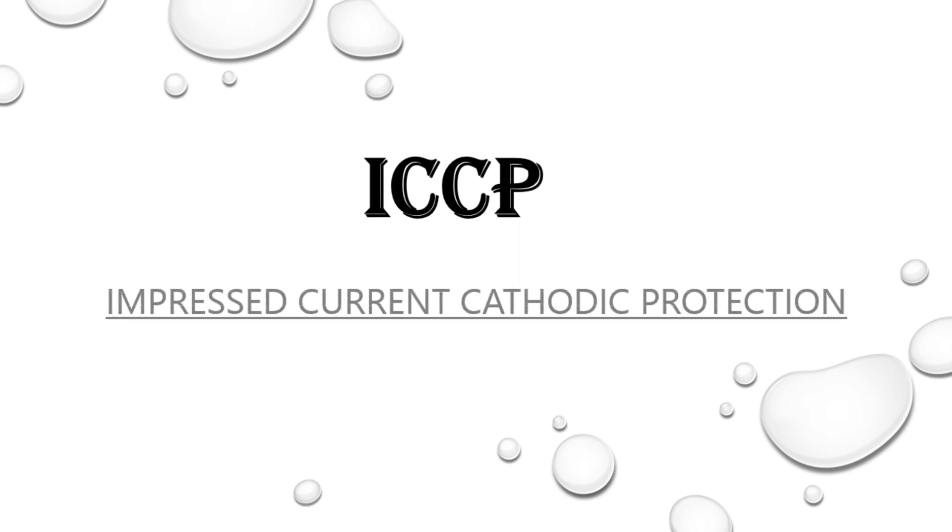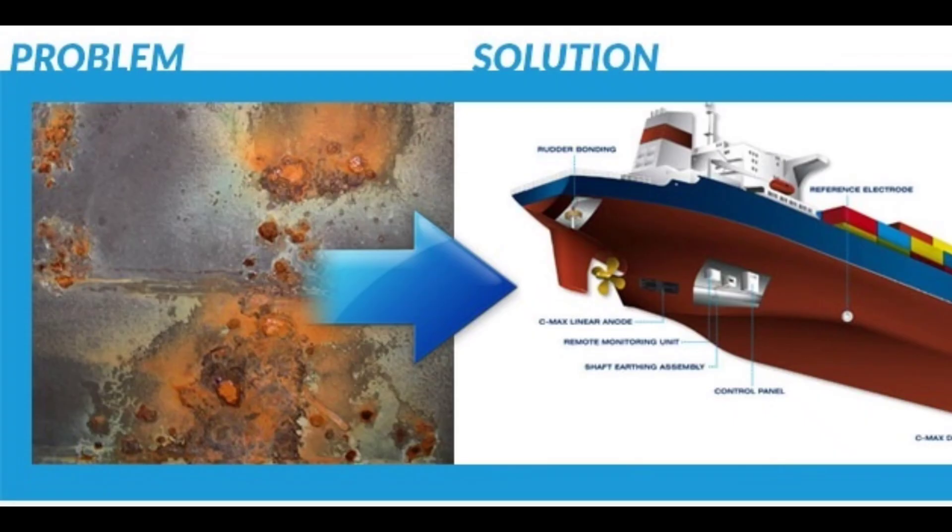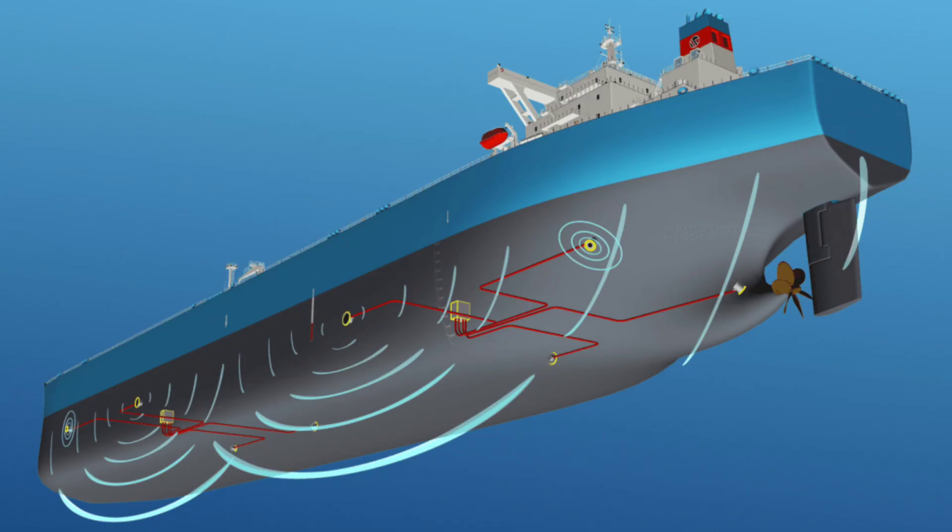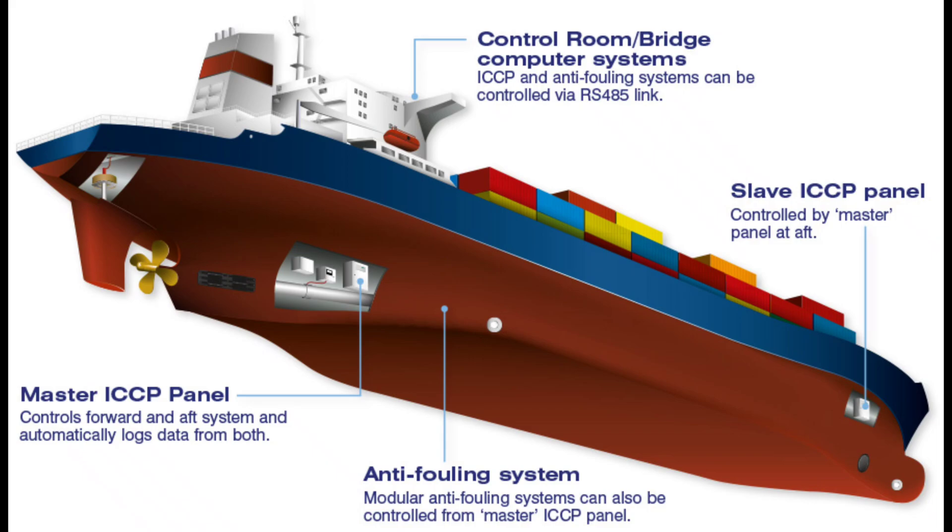Hello guys, welcome to my channel. Today we will discuss ICCP - Impressed Current Cathodic Protection. These systems are used to protect the metal surfaces of ships exposed to marine environment. ICCP systems consist of sacrificial anodes connected to an external power source.